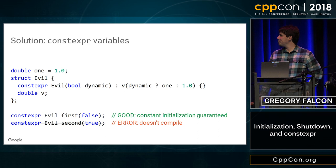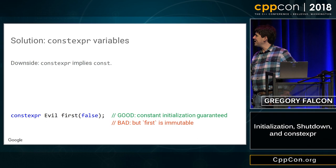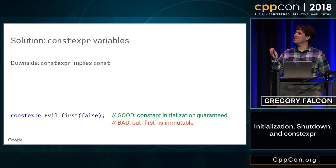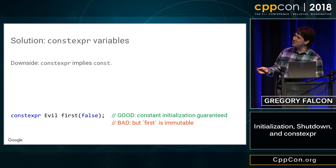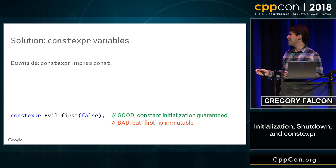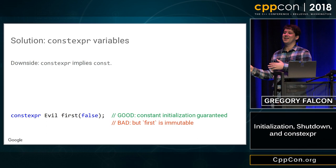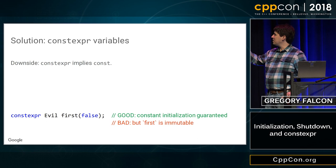The downside to this approach is that constexpr implies const, and this is unfortunate — constexpr has gotten overloaded like every keyword in C++. What I wanted to express was: I want constant initialization. Constant initialization means initialization from a constant — it doesn't mean initialization of a constant. So this is great if you wanted your object to be constant, but maybe you wanted first to be mutable, and now this doesn't work for you.